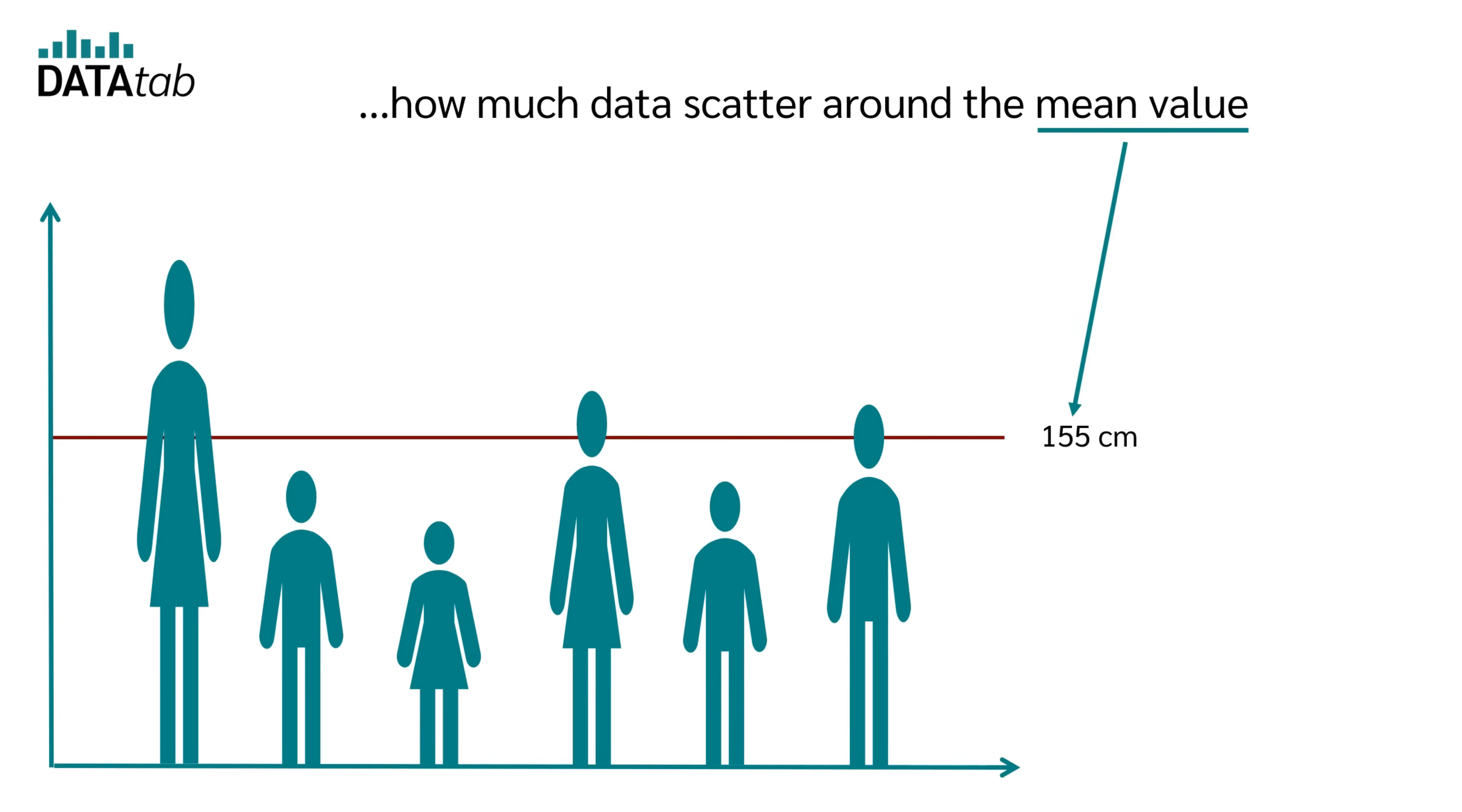Now we want to know how much each person deviates from the mean. So we look at the first person who deviates 18 cm from the mean value. The second person deviates 8 cm from the mean value and so on. Finally, person number 6 deviates 6 cm from the mean value. So simply said, people that are very small or very tall deviate more from the mean value.